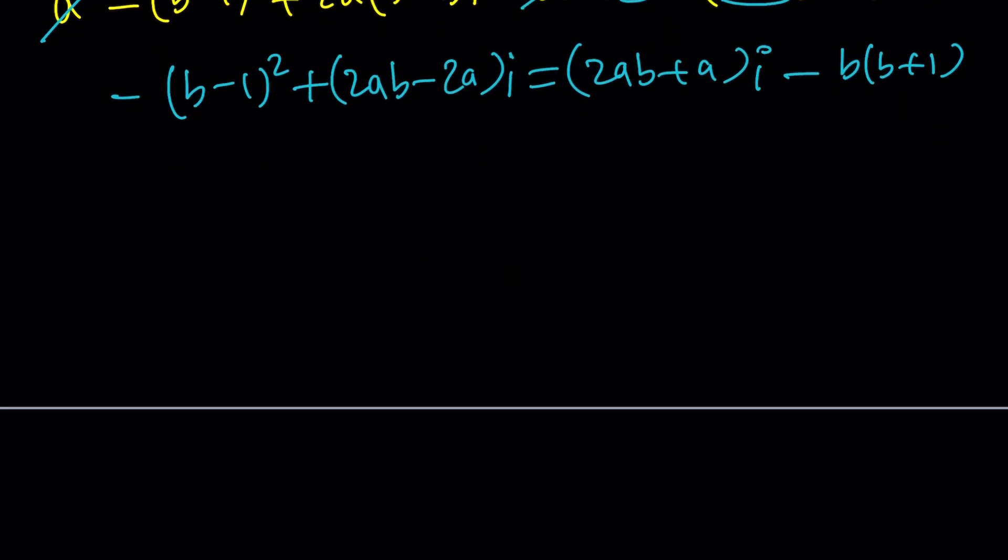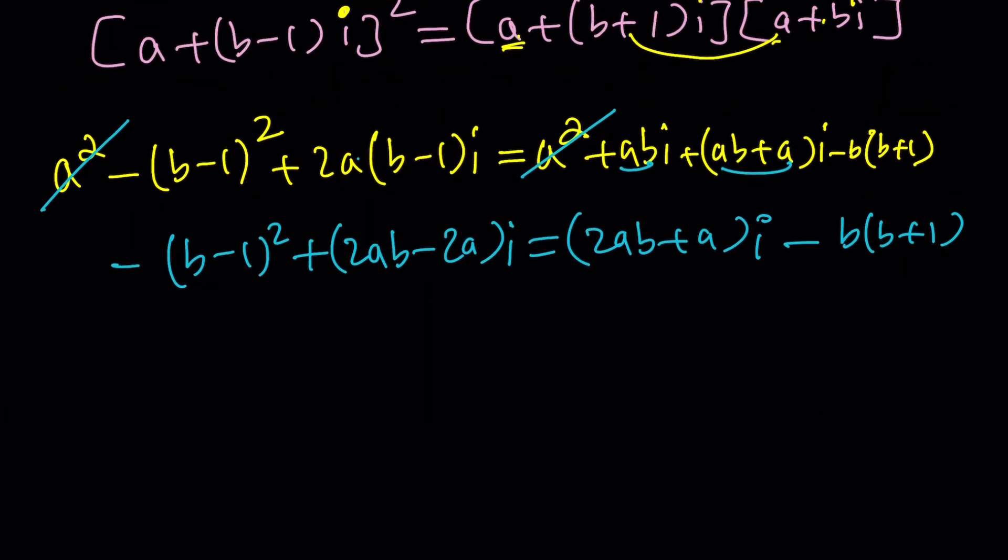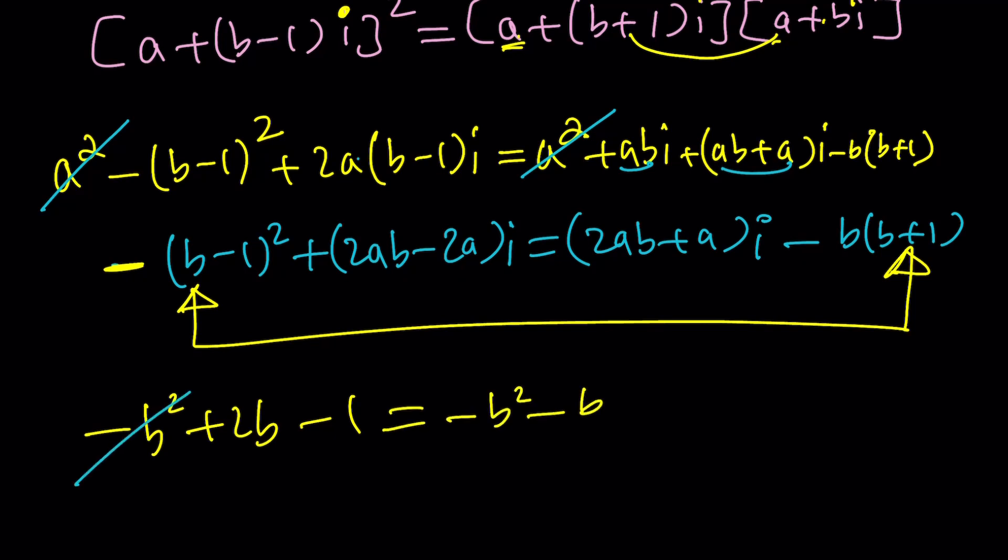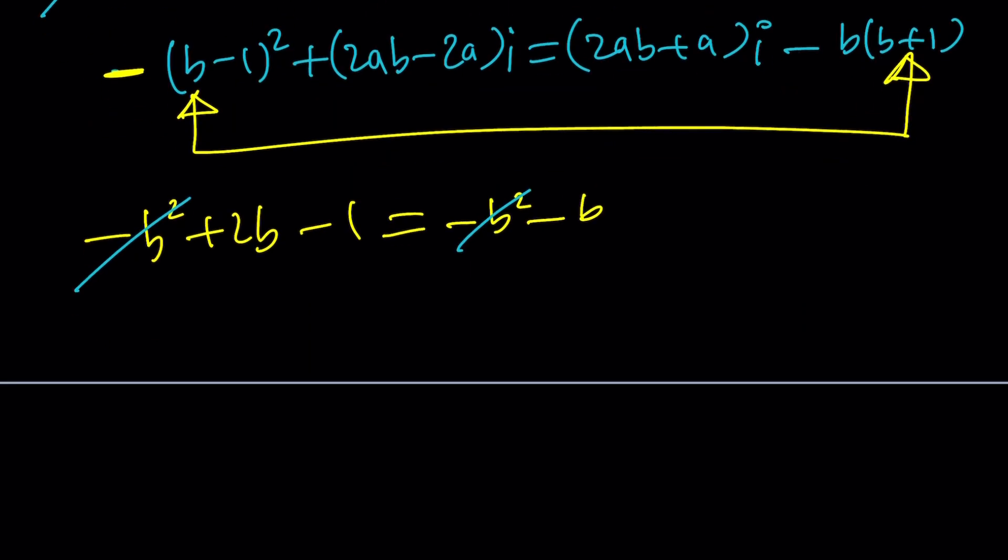Now we're going to compare the real parts and imaginary parts. The real parts are here, these two. Let's compare them. I have a minus sign in front of a perfect square, so I have to be careful. Think about b minus 1 squared and negate it. Minus b squared plus 2b minus 1. That should equal minus b squared minus b. Notice that minus b squared cancels out. We got 3b, 2b or not 2b. I forgot to say that. Equals 1. From here, b equals 1 third. Awesome.